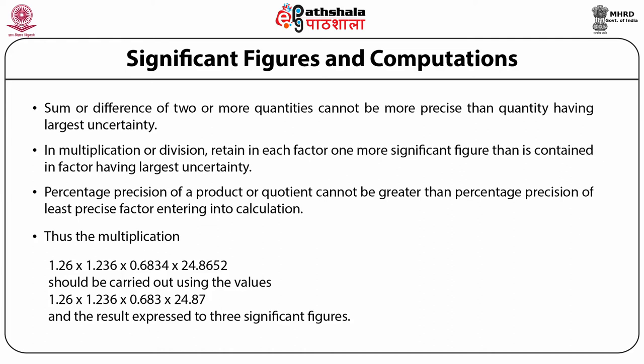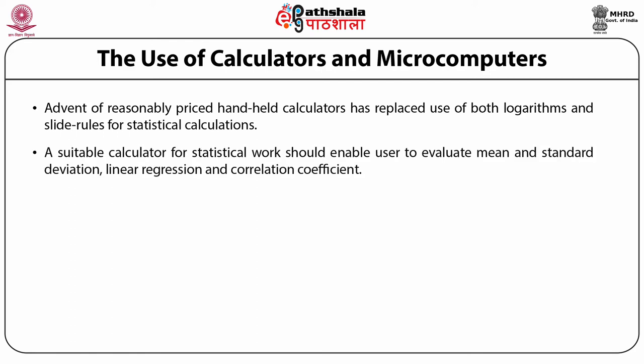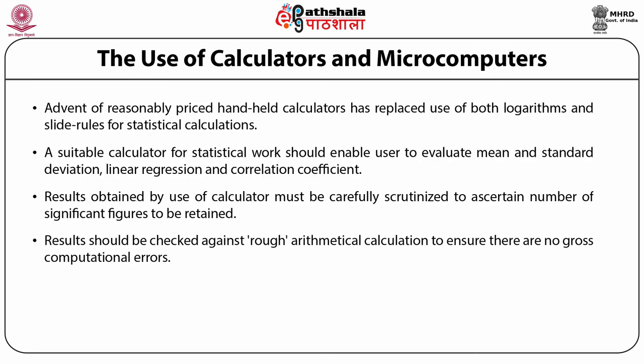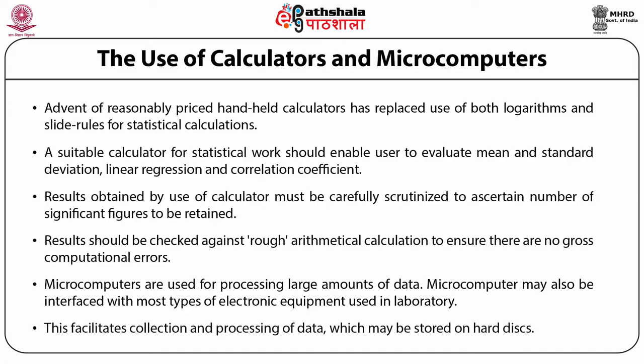The use of calculators and microcomputers: Hand calculators have replaced the use of logarithms and slide rules for statistical calculations. A suitable calculator for statistical work should enable the user to evaluate the mean and standard deviation, linear regression, and correlation coefficient. Results from calculators must be scrutinized for the correct number of significant figures and checked against rough arithmetical calculations. Microprocessors are used for processing large amounts of data and may be interfaced with most types of electronic laboratory equipment, facilitating collection and storage of data on pen drives or hard disks.